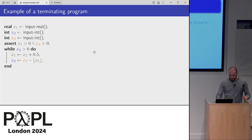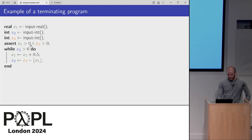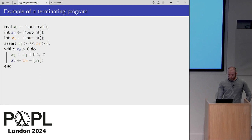Let's take a look at this example program. We have three variables x1, x2, and x3. x1 is a real variable that gets some real input. x2 and x3 get integers as input. We want that x1 is greater than 0 and x3 is greater than 0. Then we enter a while loop while x2 is greater than 0. We add to x1 in each step one half, and then we assign to x2 the difference of x3 minus the floor of x1. This floor operator means it's the greatest integer that is smaller than x1.